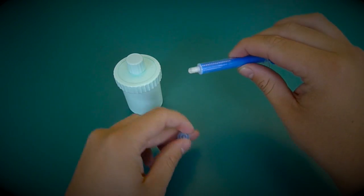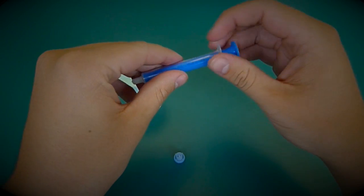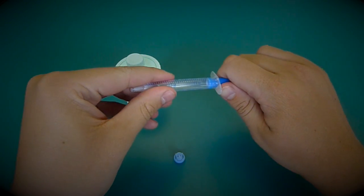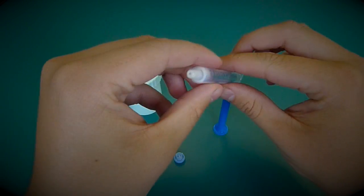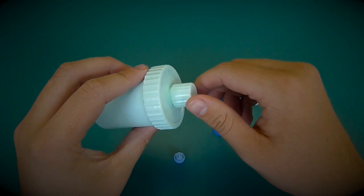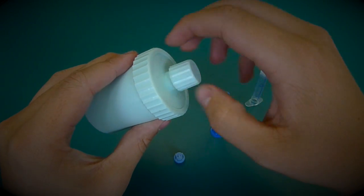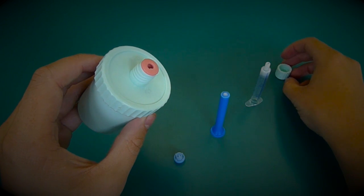Start by removing the tip cap then the plunger from the syringe body and set them aside. You will then take the EMP jar and remove the small cap from the top to reveal the adapter for the oral syringe.